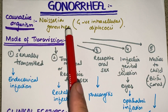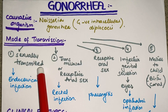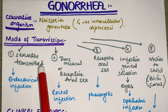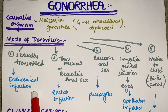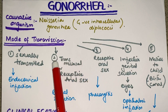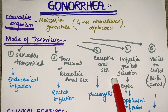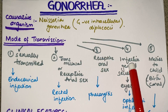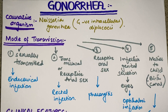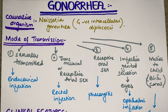Talking about its mode of transmission: this bacteria is transmitted sexually, so it is a sexually transmitted disease. It can transmit through the endocervical/cervical route producing cervical infection, by the transmucosal route or by receptive anal sex producing rectal infection, by receptive oral sex producing pharyngitis, by exposure of the eyes to infective genital secretions causing ophthalmic infection, and fifth, it can transmit from mother to neonate during childbirth through the infected birth canal.